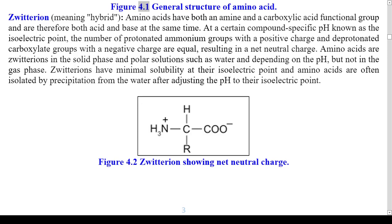Figure 4.1: General Structure of Amino Acid. Zwitterions — meaning hybrid — amino acids have both an amine and a carboxylic acid functional group and are therefore both acid and base at the same time. At a certain compound-specific pH known as the isoelectric point, the number of protonated ammonium groups (positive charge) and deprotonated carboxylate groups (negative charge) are equal, resulting in a net neutral charge. Amino acids are zwitterions in the solid phase and in polar solutions such as water, but not in the gas phase. Zwitterions have minimal solubility at their isoelectric point and amino acids are often isolated by precipitation after adjusting the pH to their isoelectric point.